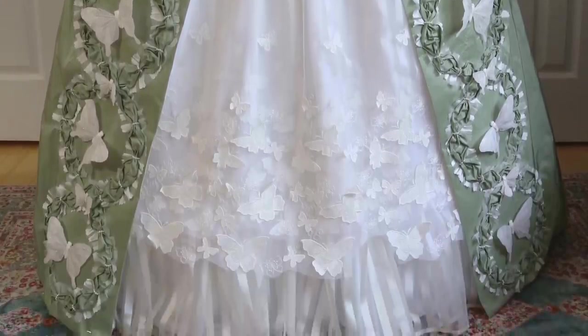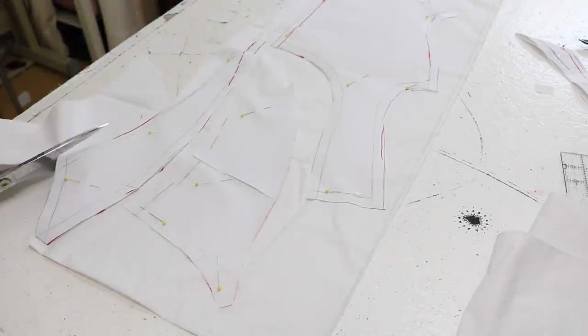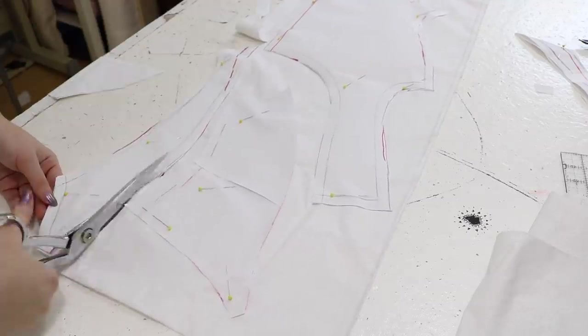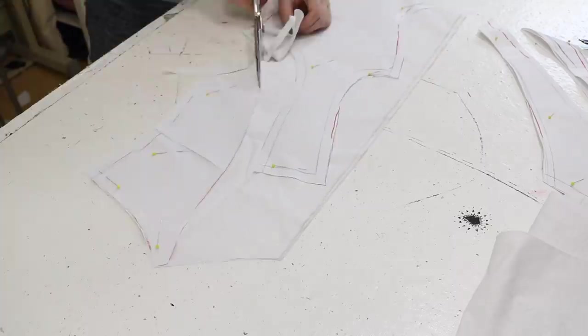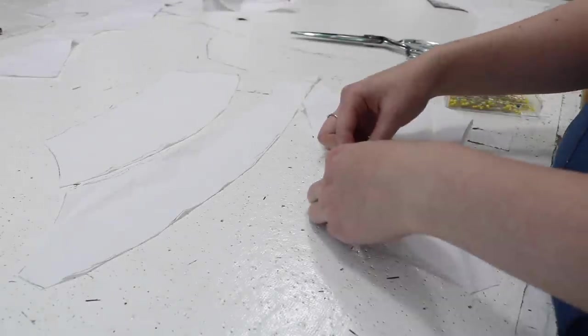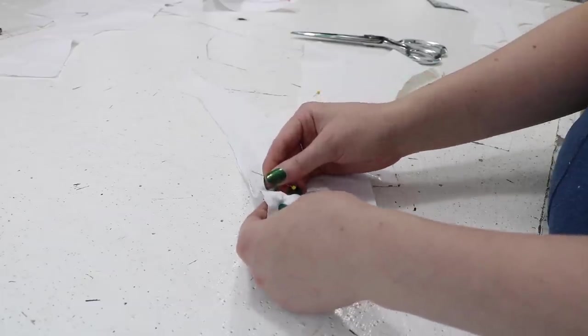I started by cutting the bodice out from four layers of cotton. Two of these layers will be used to back the fashion fabric, and the other two will be used as actual lining. I pinned the side and side back panels of lining together, as well as the two back panels.